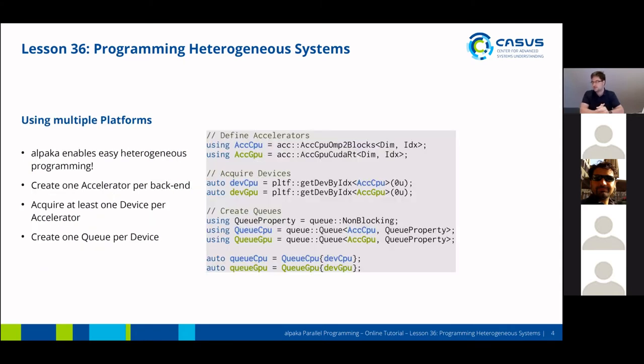With ALPAKA, heterogeneous programming is fairly easy. All you have to do is create one accelerator per backend. So in our example here, we will create an accelerator for the CPU based on OpenMP, and we'll create an accelerator for GPUs based on CUDA. Then we have to acquire devices, at least one device per accelerator. So in this example here, we are acquiring one device for CPU and one GPU device.